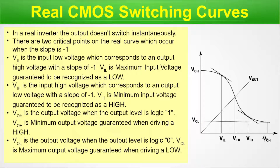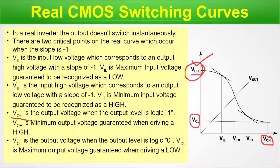A correction here: this axis is V output and this is V input. This is VOH and this is VOL. So VOH is the output high voltage and VOL is the output low voltage on the switching curve.